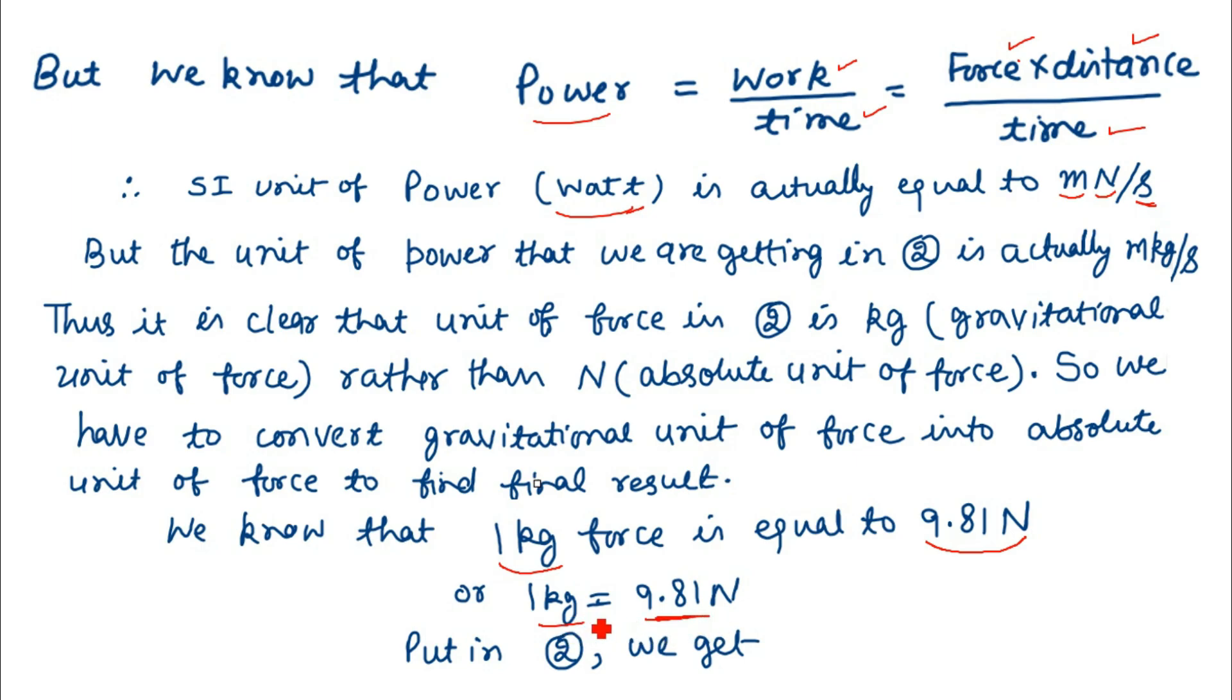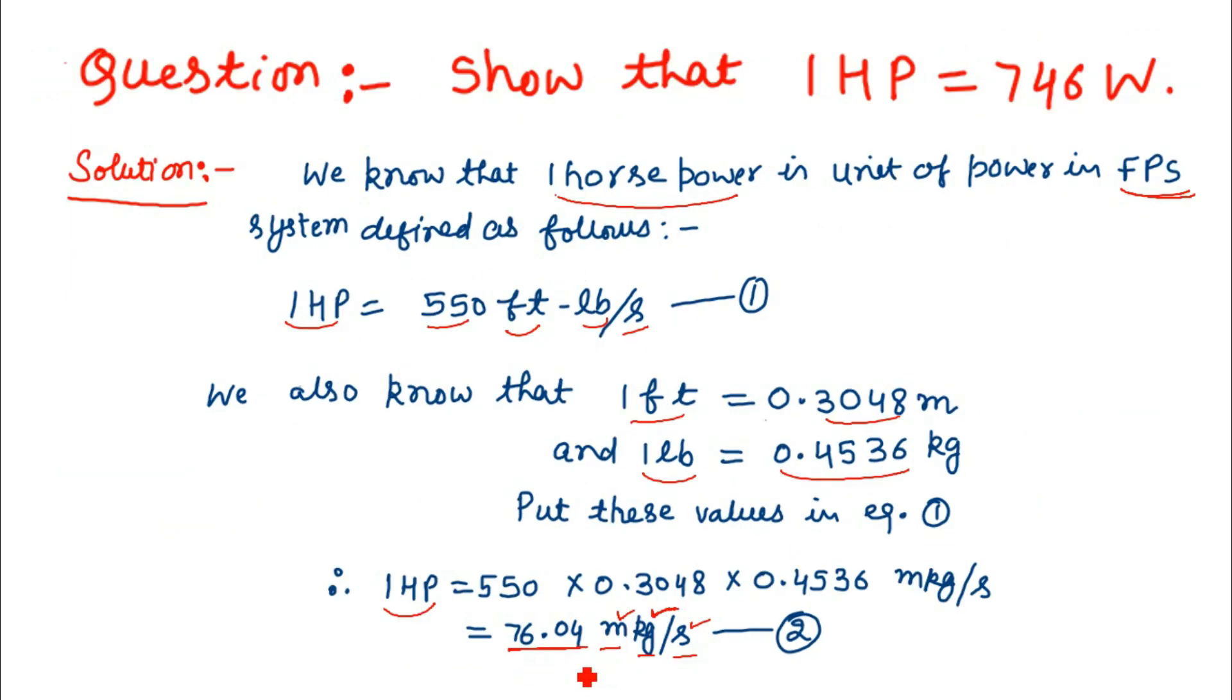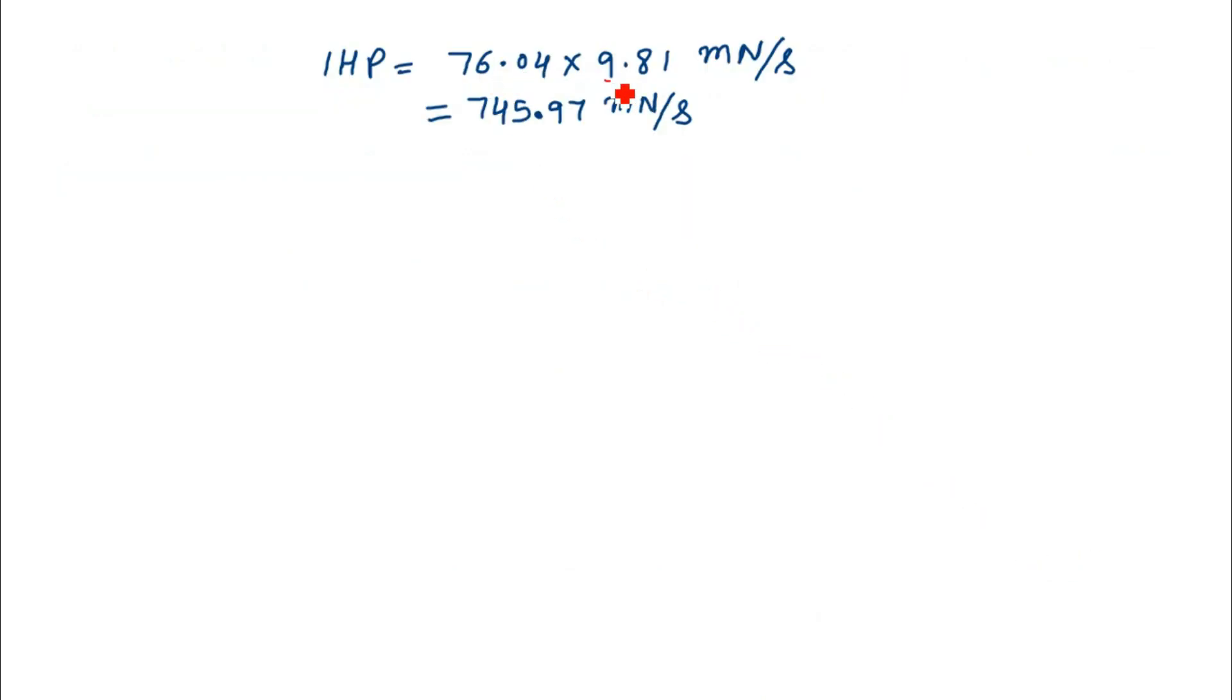Let us now put this value in equation 2. So, putting 1 kg = 9.81 N, let us see what the final result is.